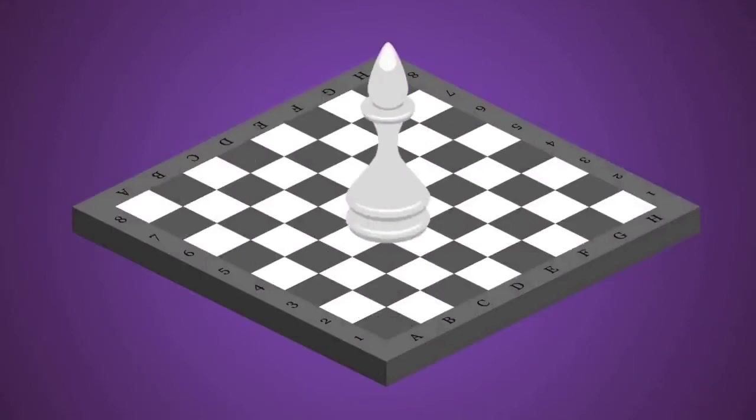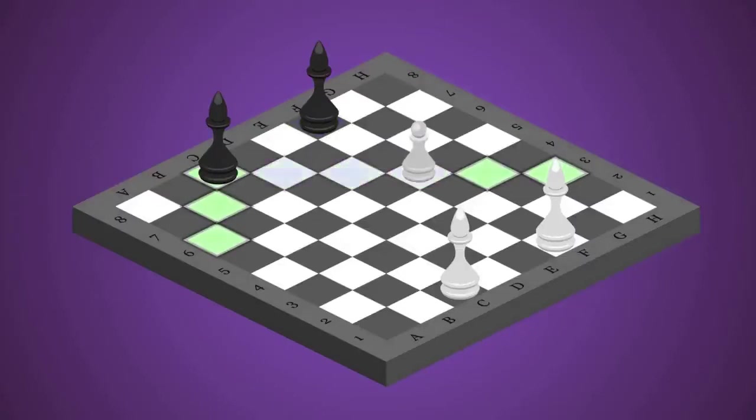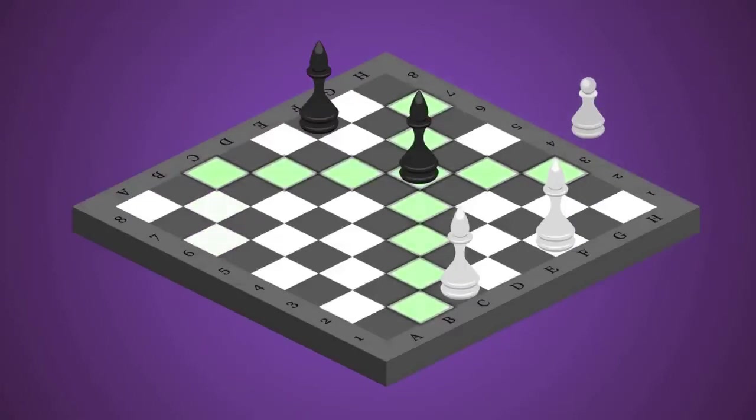Next up, we have the bishops, in squares C1 and F1, or C8 and F8. Bishops can move over any number of free squares in a diagonal direction. Just like rooks, they can capture an opponent's piece standing in their way by stopping on that piece's square.